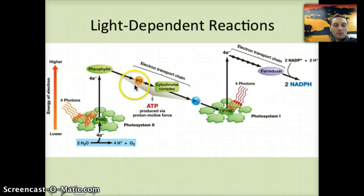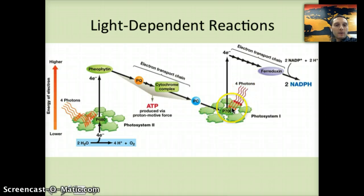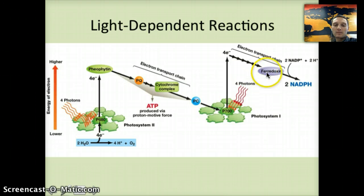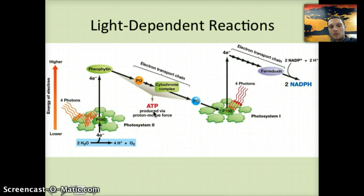The electrons move through the different enzymes that make up the electron transport chain until they reach a second photosystem, also within the thylakoid membrane. Additional light photons are absorbed at a different pigment, P700 this time. Those electrons are again excited and move through a second electron transport chain. In this process, two NADPH are produced, similar to the NADH we saw in cellular respiration. The NADPH and ATP will be used in the Calvin cycle during the light-independent reactions to make sugar.